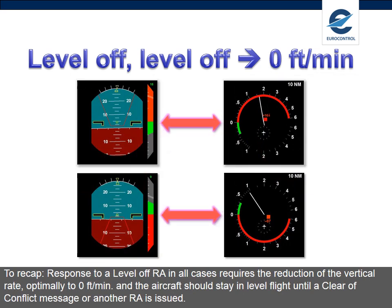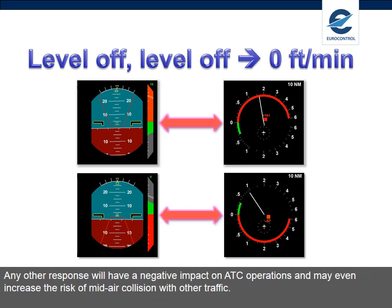To recap, response to a Level Off RA in all cases requires the reduction of the vertical rate, optimally to 0 feet per minute, and the aircraft should stay in level flight until a Clear of Conflict message or another RA is issued. Any other response will have a negative impact on ATC operations and may even increase the risk of mid-air collision with other traffic.